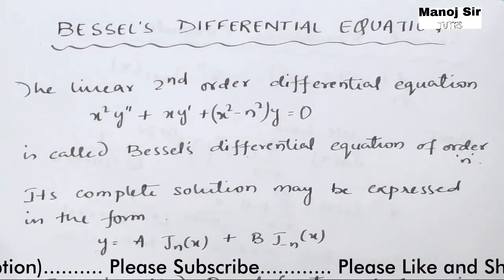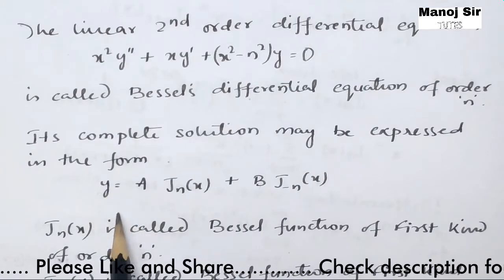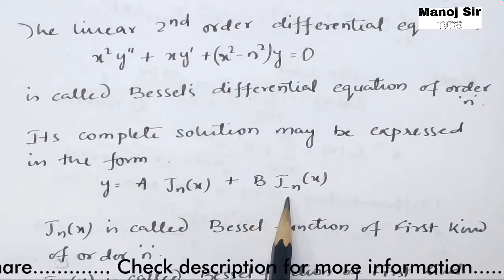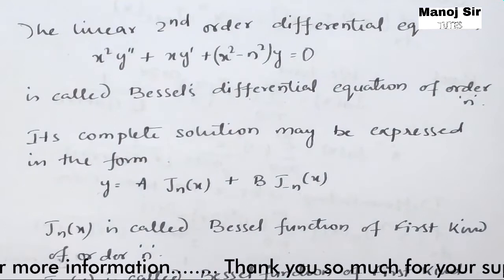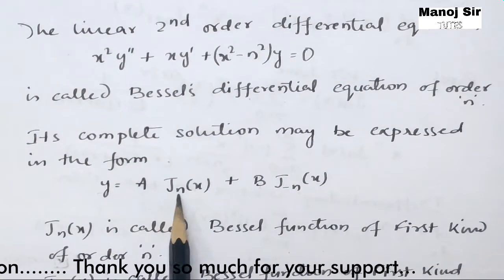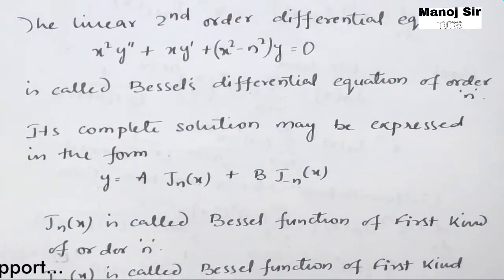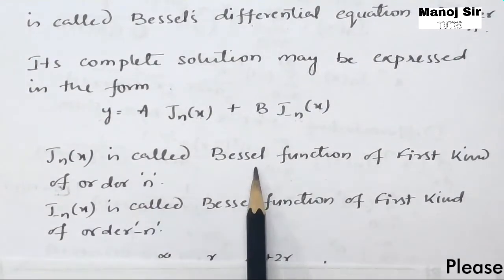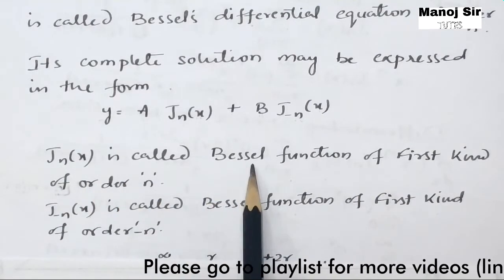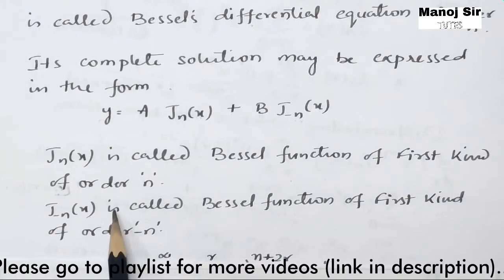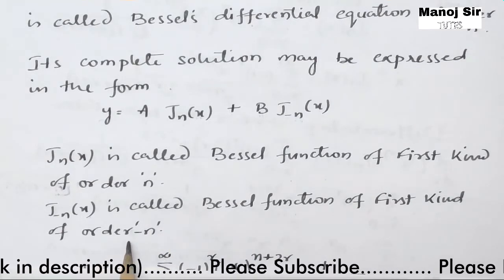The complete solution of this equation may be expressed in the form y = A · Jₙ(x) + B · J₋ₙ(x), where Jₙ(x) is called Bessel's function of the first kind of order n, and J₋ₙ(x) is called Bessel's function of the first kind of order −n.